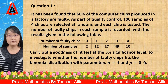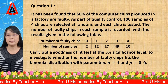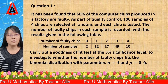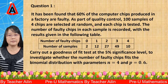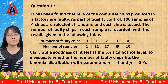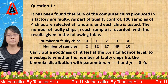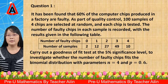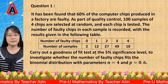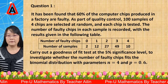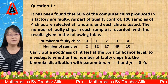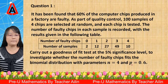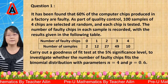It has been found that 60% of the computer chips produced in a factory are 40. As part of quality control, 100 samples of four chips are selected at random and each chip is tested. The number of 40 chips in each sample is recorded, with results given in the following table. Carry out a goodness of fit test at the 5% significance level to investigate whether the number of 40 chips fits the binomial distribution with parameters N equals 4 and P equals 0.6.